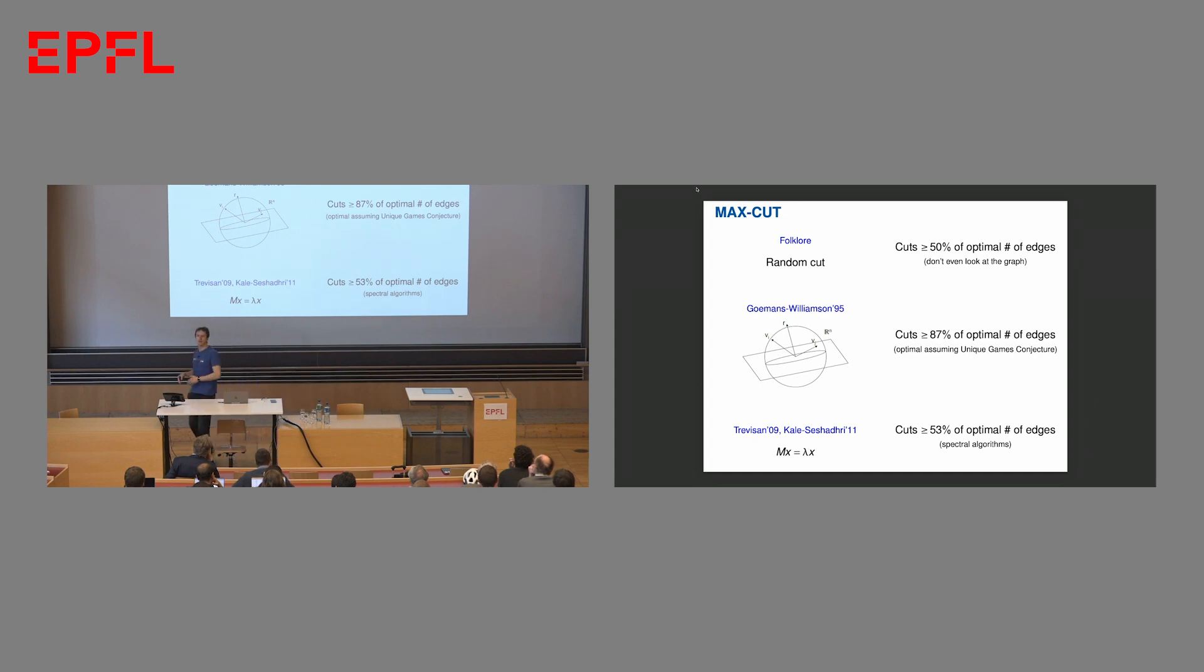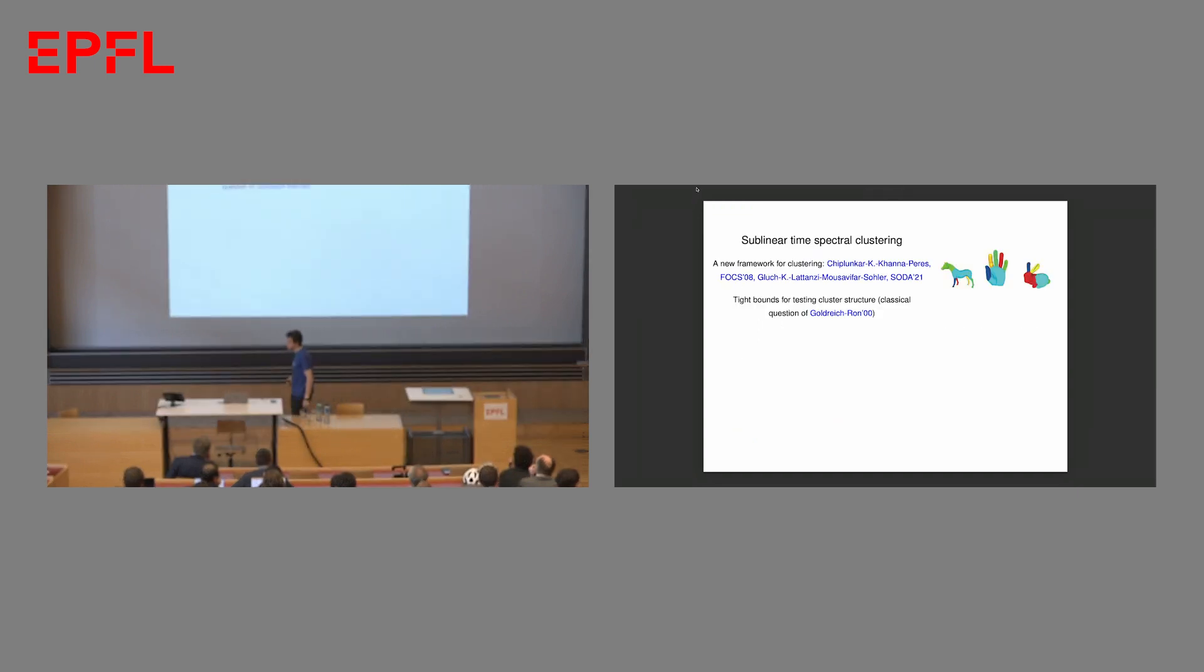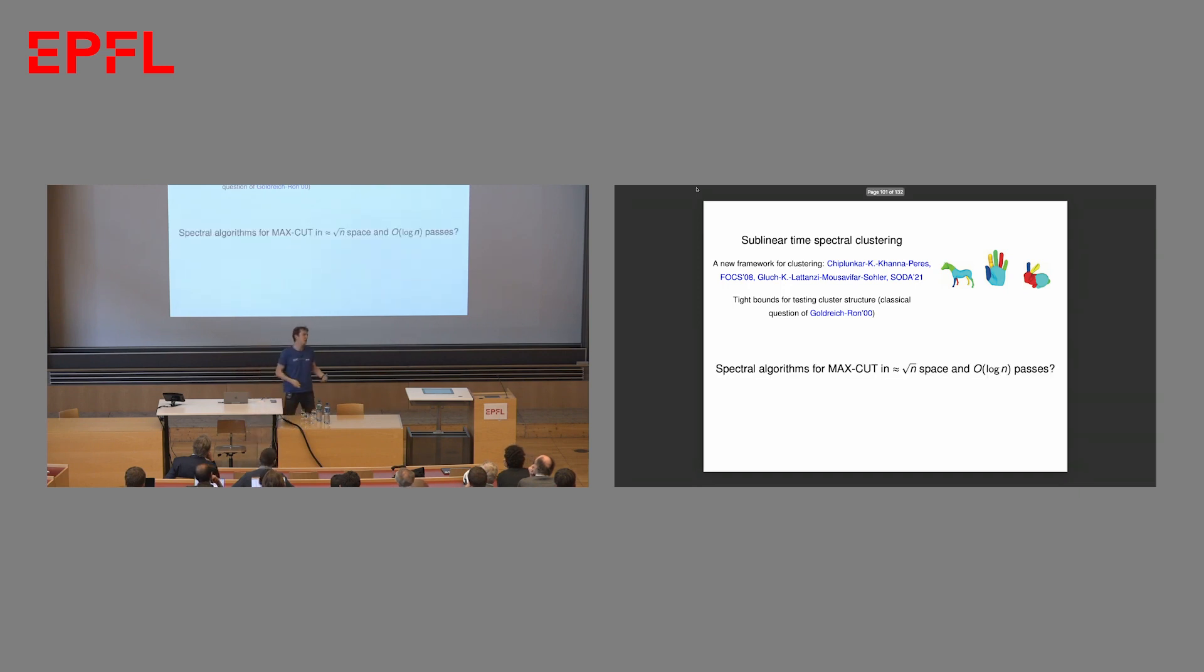So the news here is that you can't really solve MaxCut particularly well in the streaming model. You're basically at a random cut level. But on the plus side, I think this should be possible. The impossibility result heavily relies on the fact that you only get to look at the graph once. It should be possible to solve MaxCut in some sublinear amount of time without loading vertices into memory if you take a large number of passes over the stream, like logarithmic. Basically, this gives you time to propagate the information.